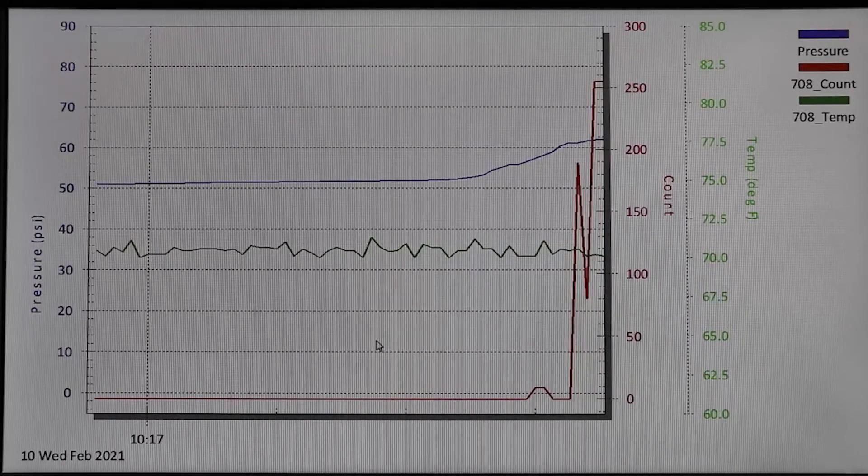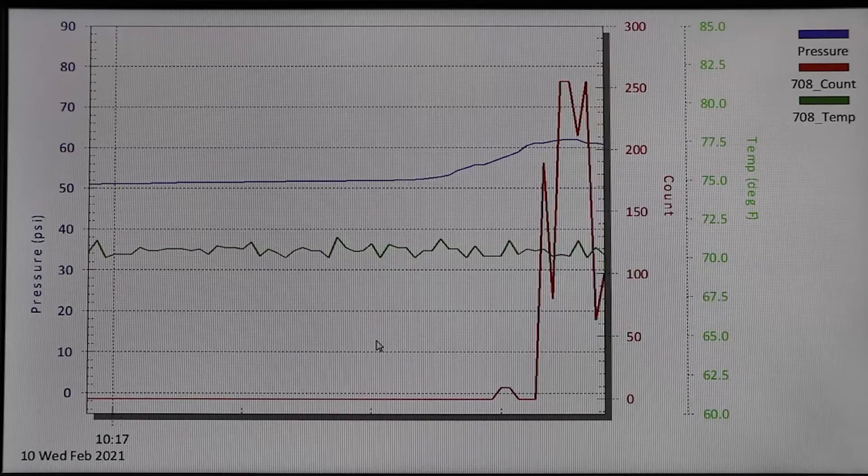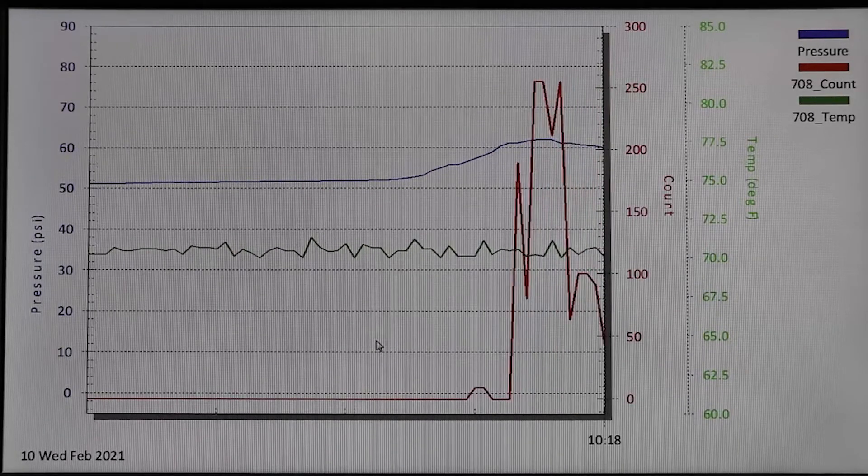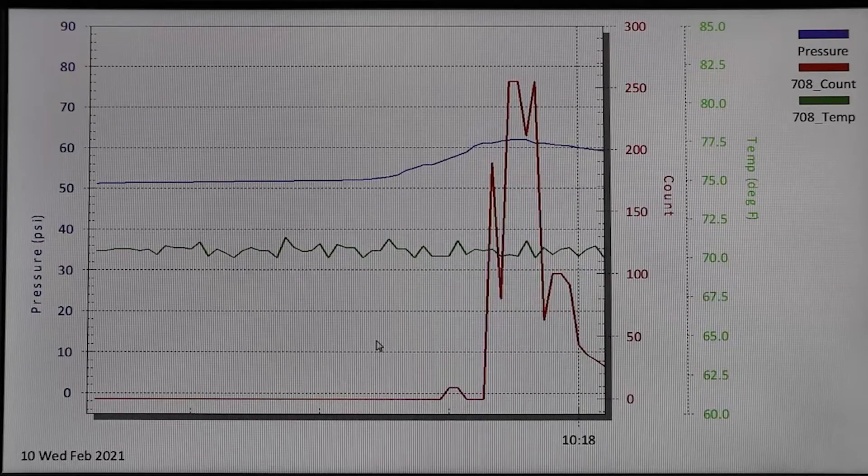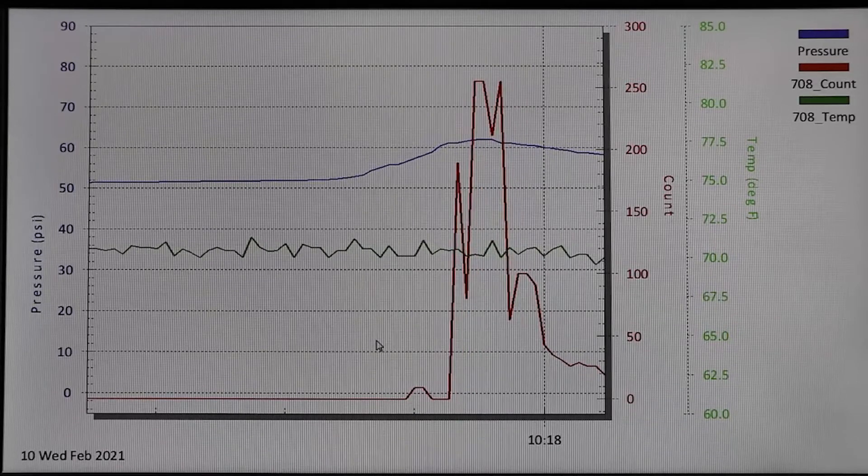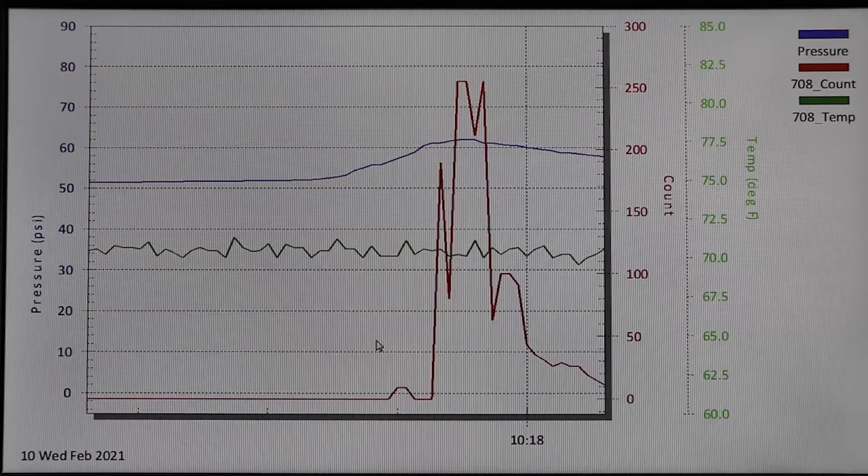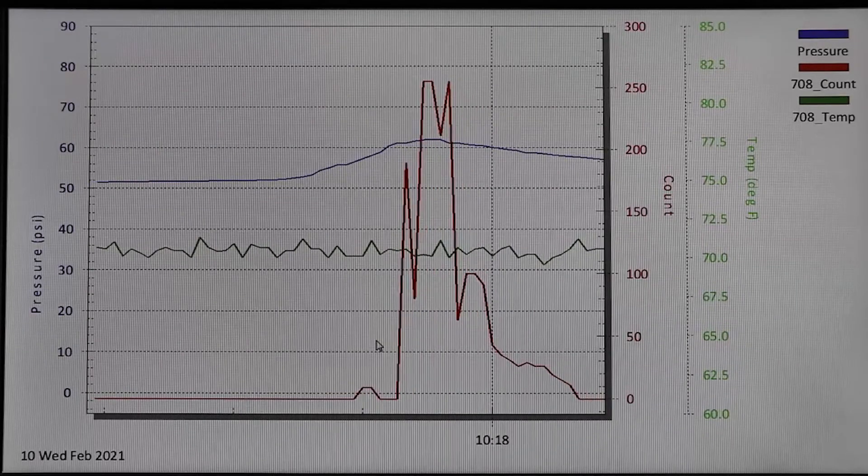Starting at the 10:17 time mark you will begin to see a gradual increase in the system pressure as indicated by the blue line moving up. At this point the pressure is below the relief valve set point of 60 psi and the valve is containing the increased pressure. The valve remains closed and is indicated by the zero data count in red from the acoustic transmitter.